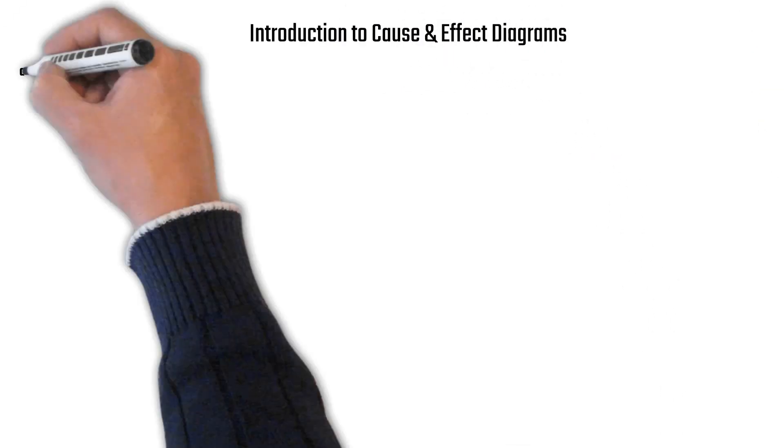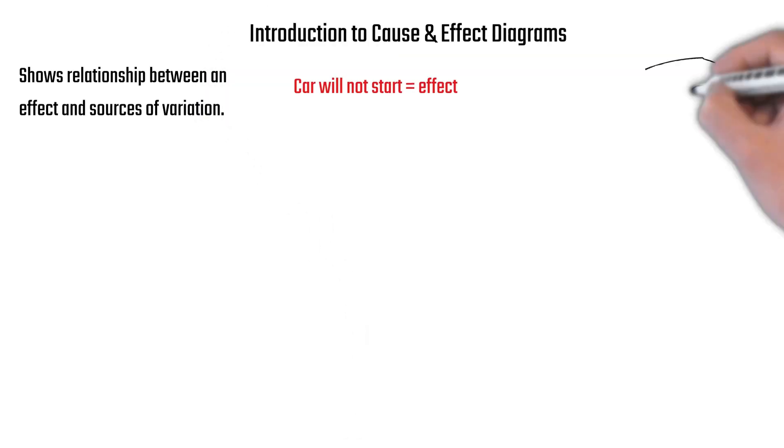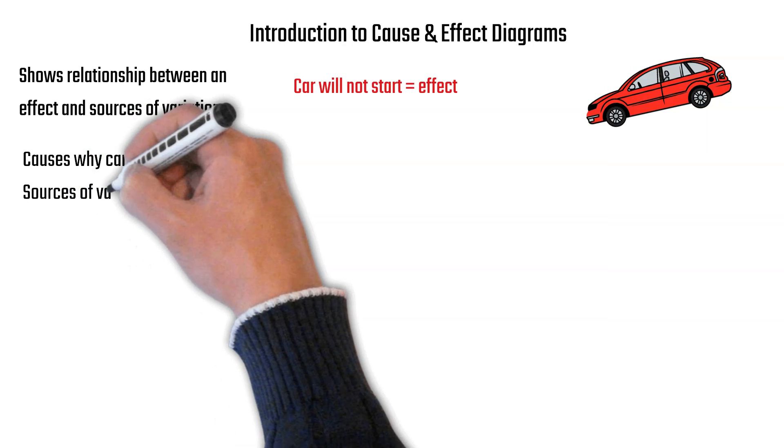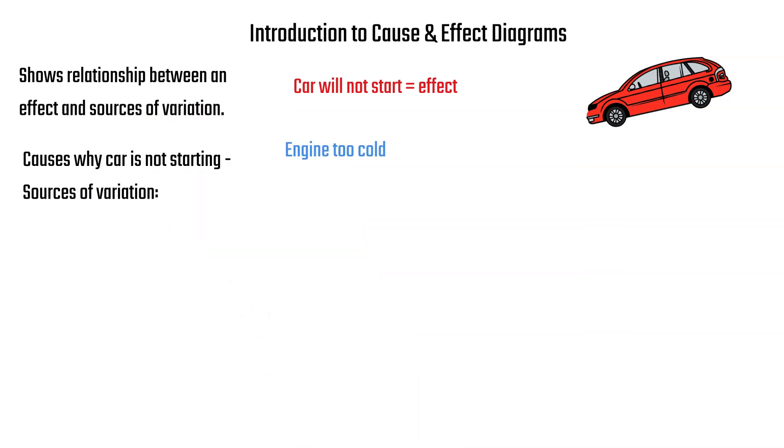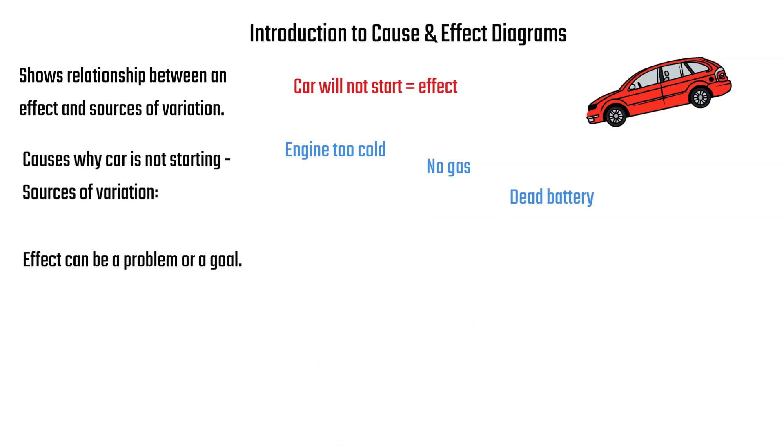So, introducing the cause and effect diagram. It shows the relationship between an effect and sources of variation in your process. Maybe the effect is your car will not start. So how come it doesn't start? Well, the engine could be too cold, there could be no gas, it could be a dead battery. Many things. But the effect can be a problem or a goal.